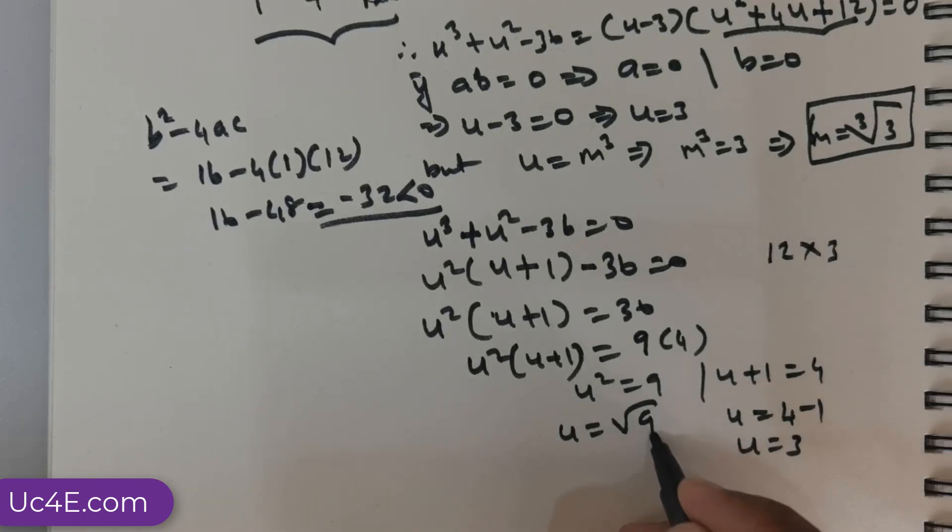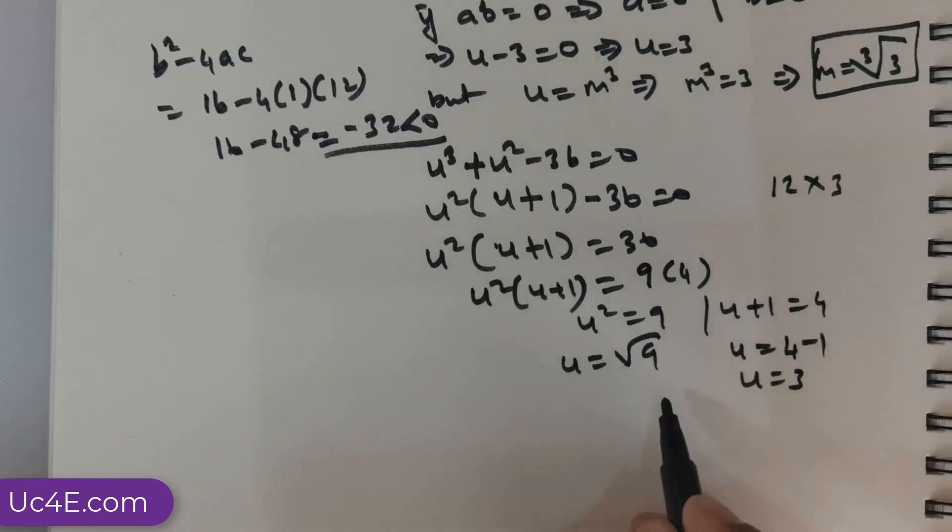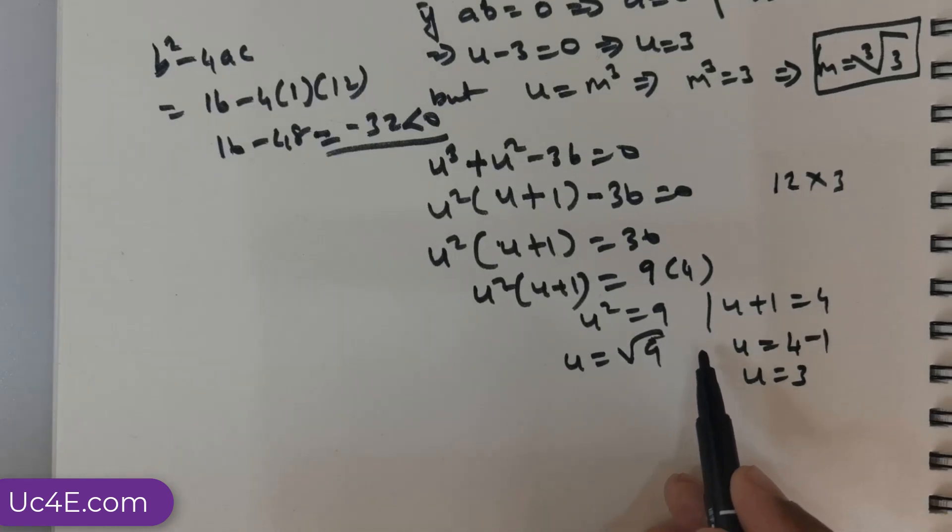In this case, u is going to be root of 9. Now, square root is a single valued function. Of course, you might be tempted to say plus 3 and minus 3 are the roots. But, it does not work like that. u equals root of 9. Square root is a single valued function. So, u = 3 in this case.